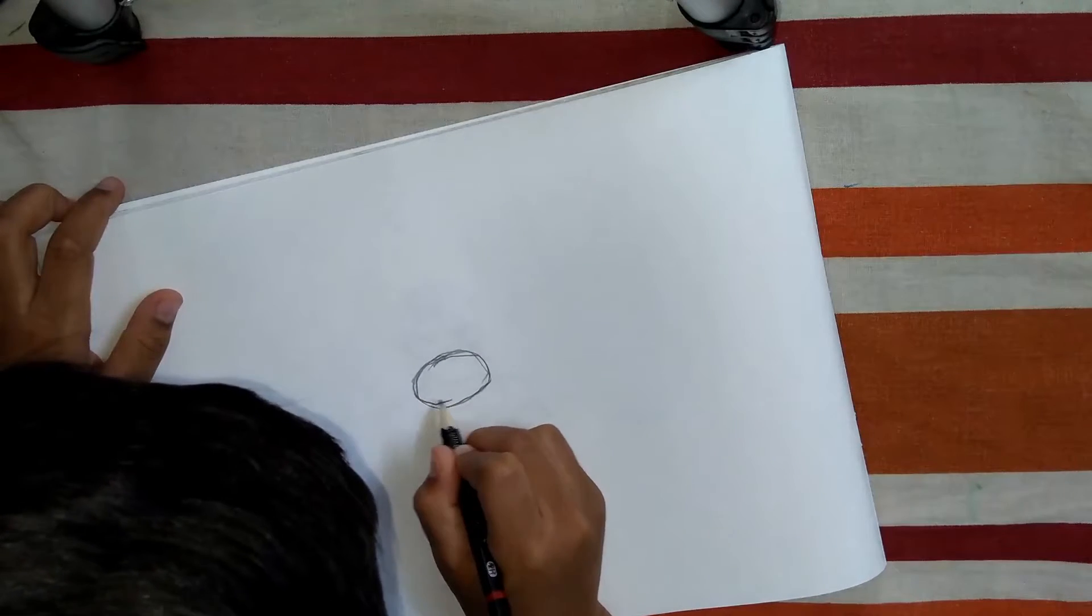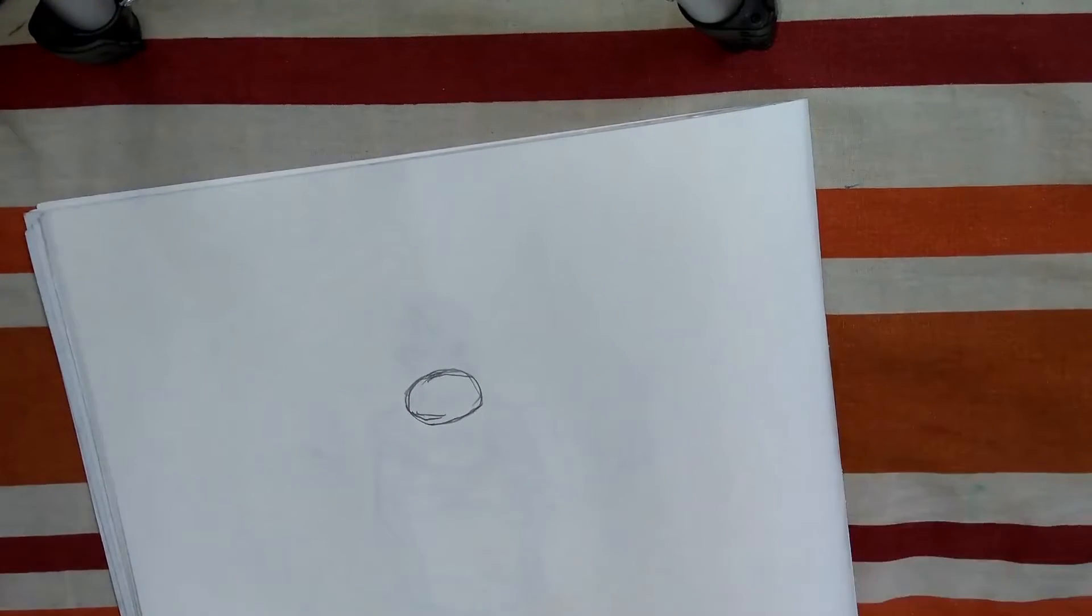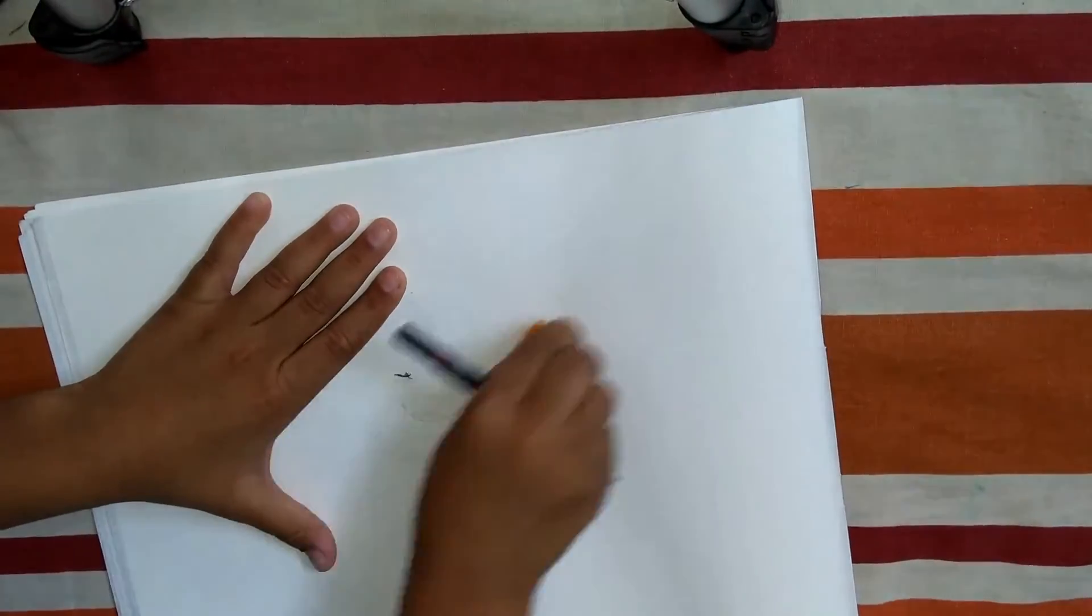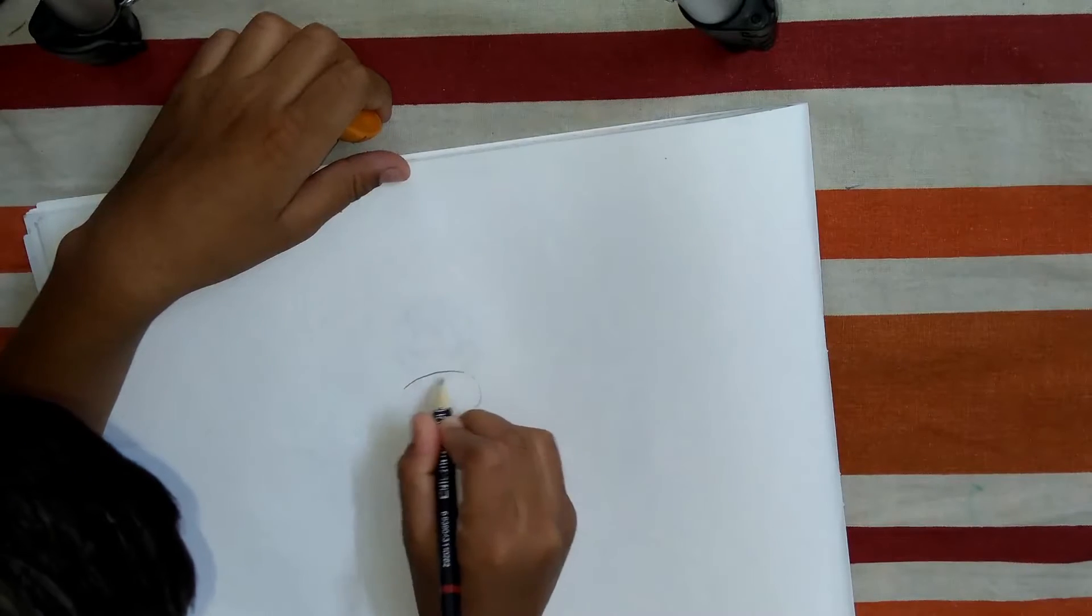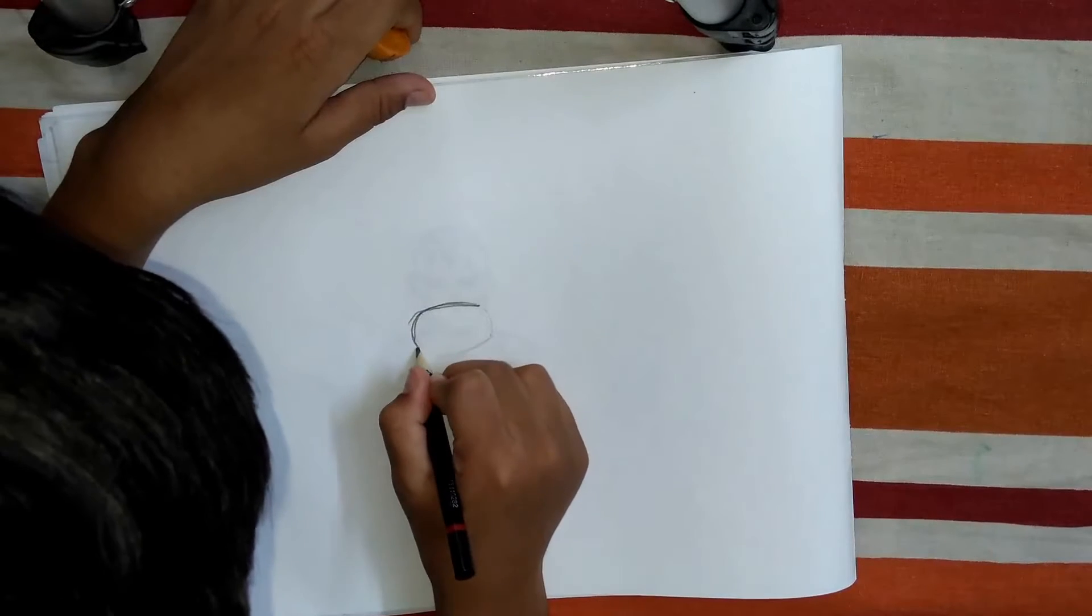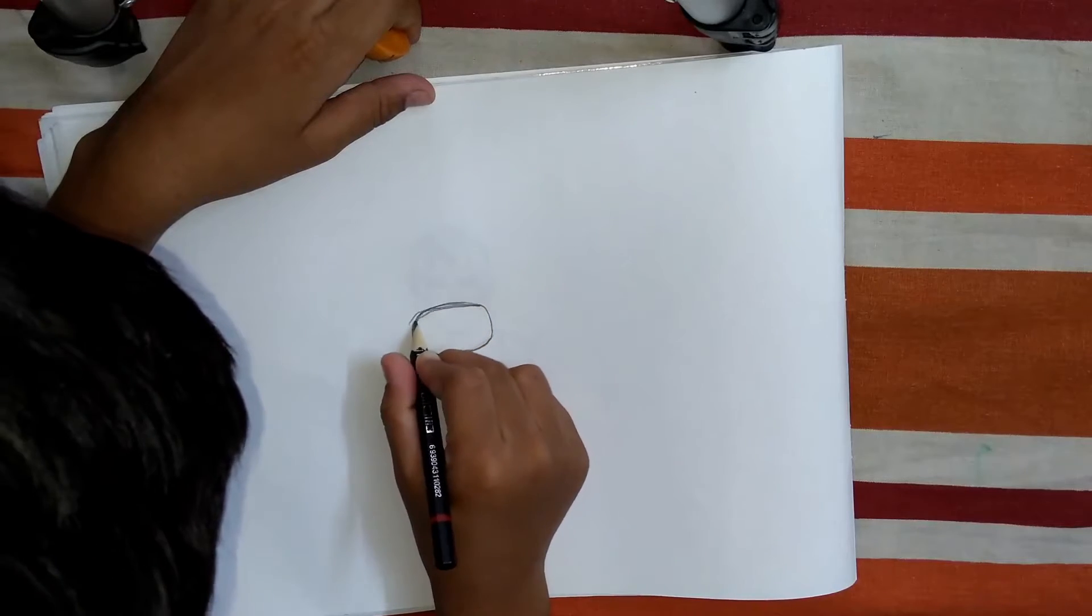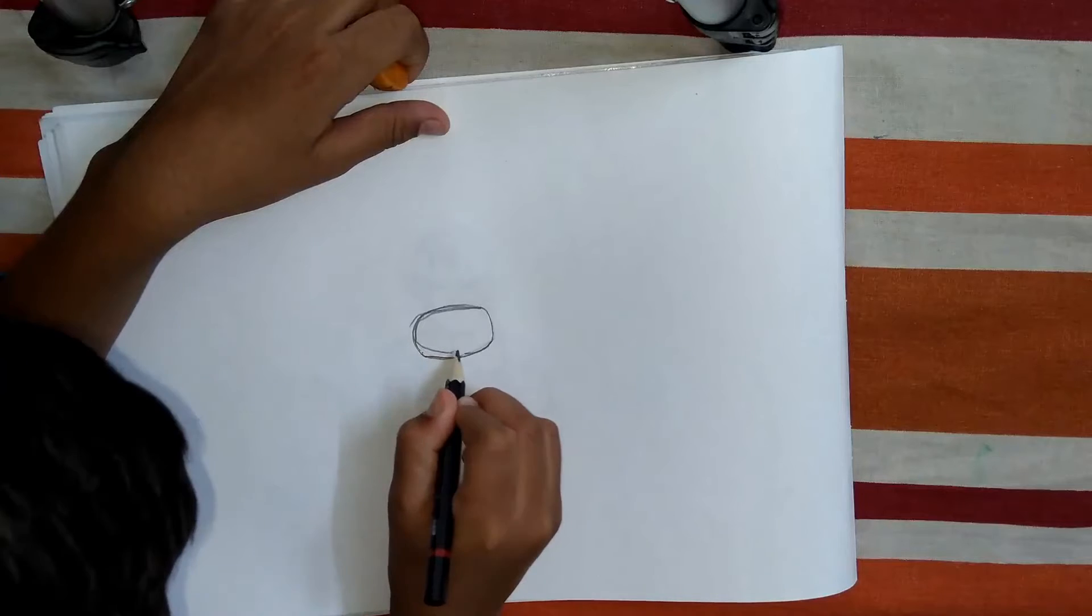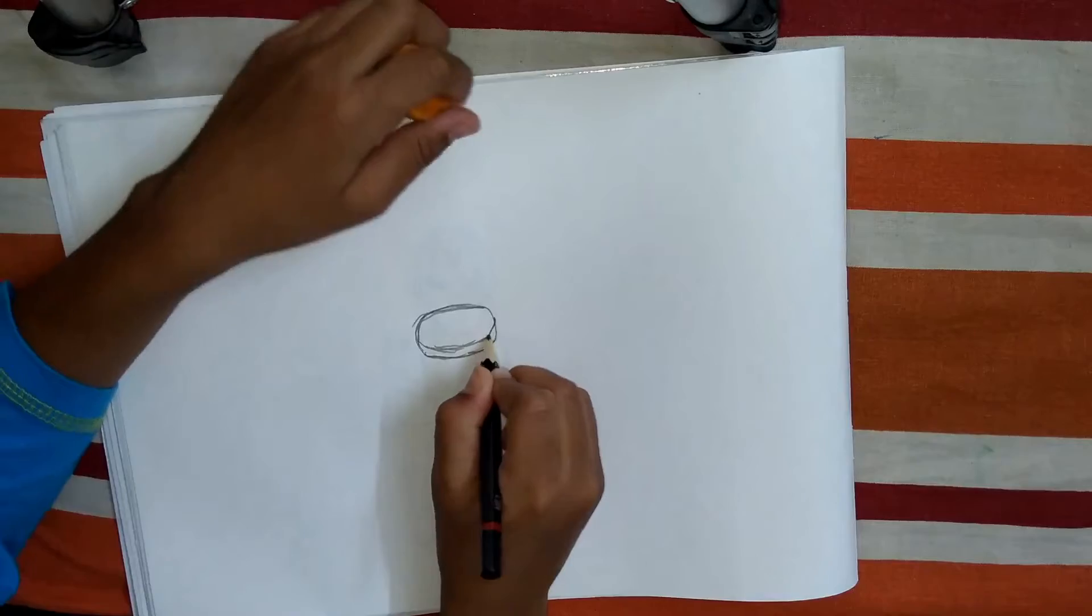Let's draw from the first part. Draw the visor shape, and then draw the visor like this.